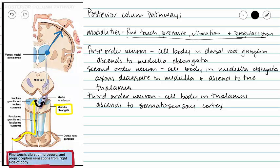So there is our posterior column pathway. The things that you need to focus on are the modalities and where we are decussating. We are crossing our second order neuron crosses in our medulla oblongata. And then our final destination is our somatosensory cortex.